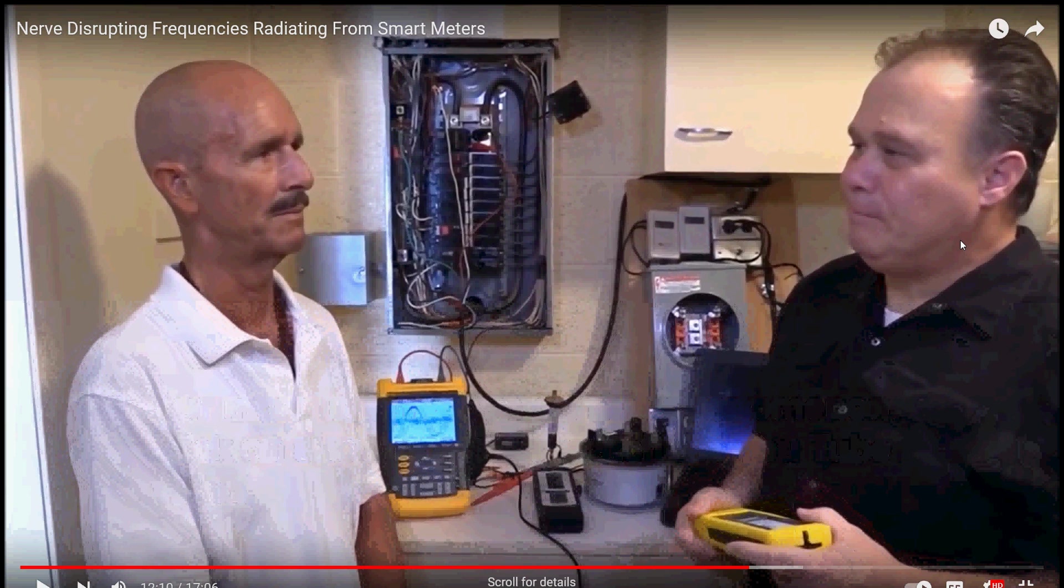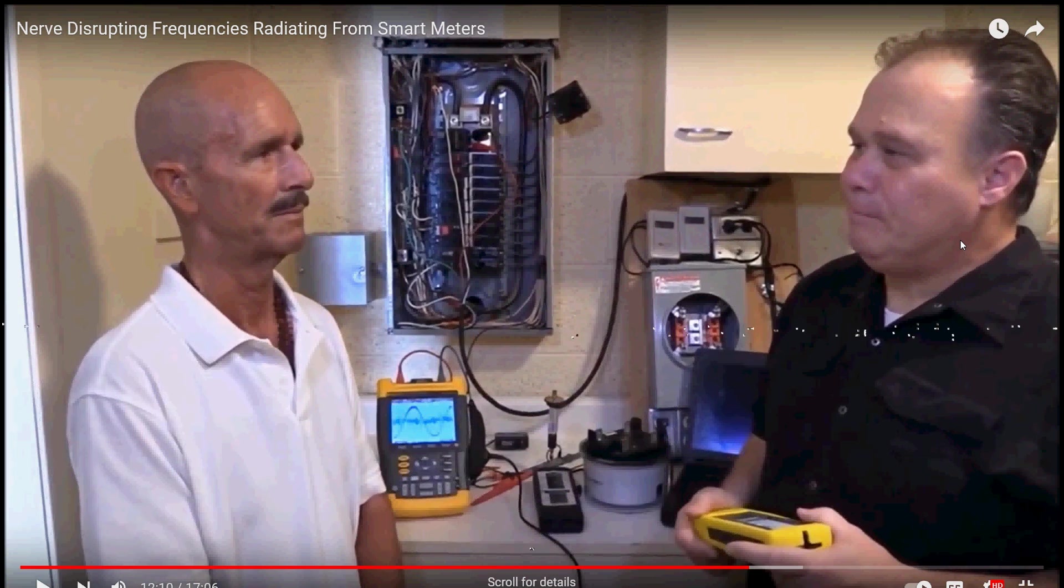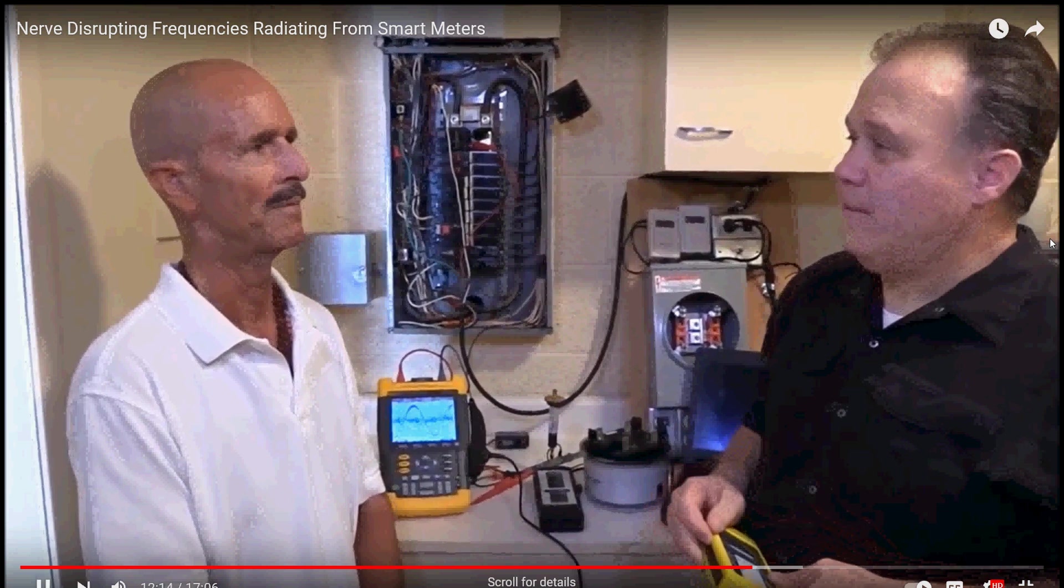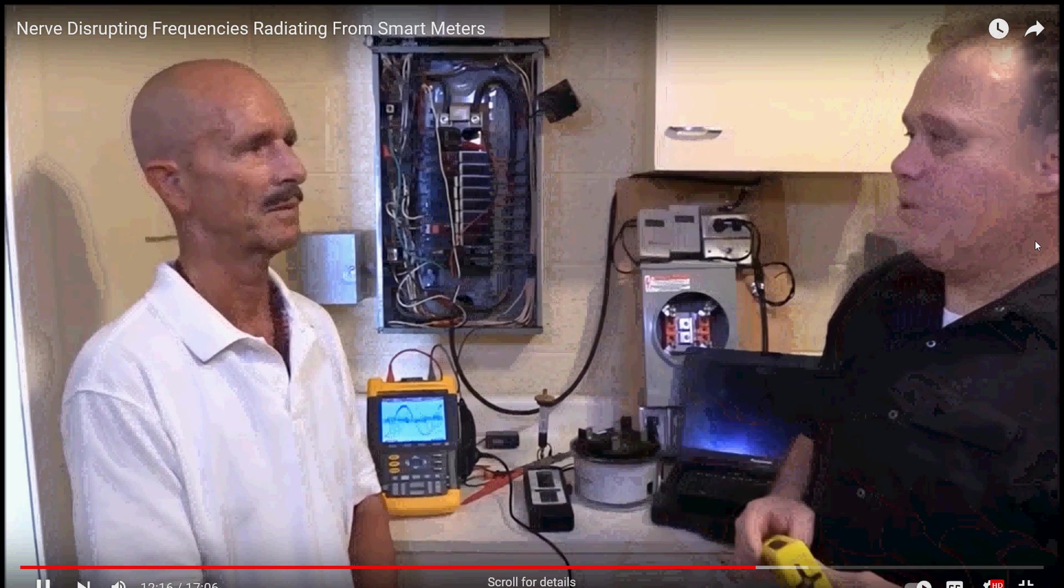So we tested our house. We tested the smart meter before I made the Faraday cage and after I put it on. And that went way, way down after I put it on. And also we tested all the other outlets and everything in the house. Everything was good except the highest amount of crap coming out was from the refrigerator.